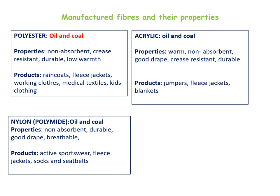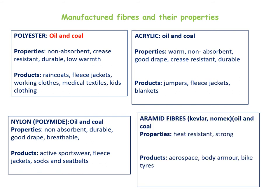Nylon comes from oil and coal. It is non-absorbent, durable and breathable. It is very lightweight, so it is suitable for things like socks, seat belts and active sportswear. Aramid fibres — these are fibres like Kevlar and Nomex. The properties are that they are heat resistant and strong, making them suitable for aerospace, body armour and bike tyres.